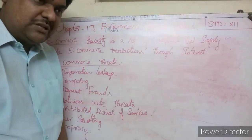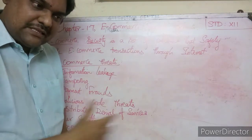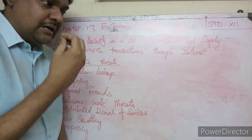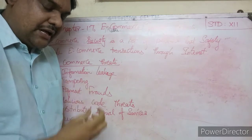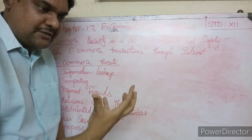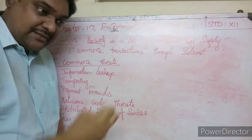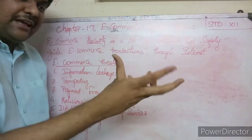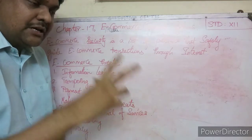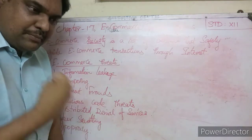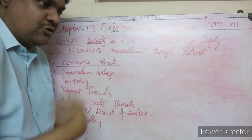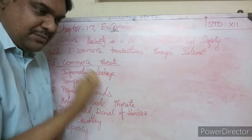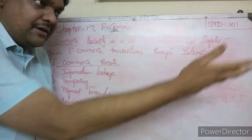The receiver gets the wrong information, causing serious problems for the business. Hackers steal the information, alter the amount — say from two lakhs to twenty thousand — and modify the payment document. Tampering means altering the information in official documents and then sending the modified version to the buyer or owner.